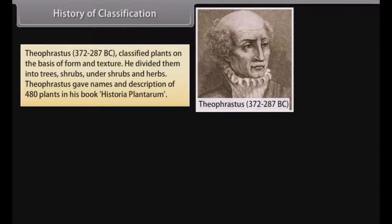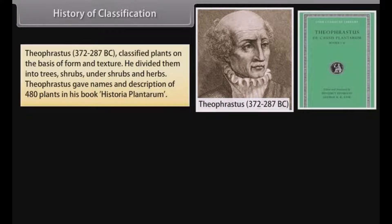Theophrastus (372–287 B.C.) classified plants on the basis of form and texture. He divided them into trees, shrubs, undershrubs, and herbs. Theophrastus gave names and descriptions of 480 plants in his book Historia Plantarum.